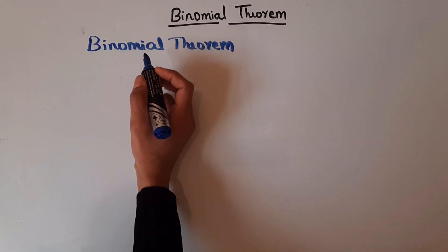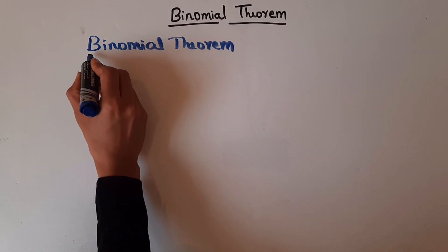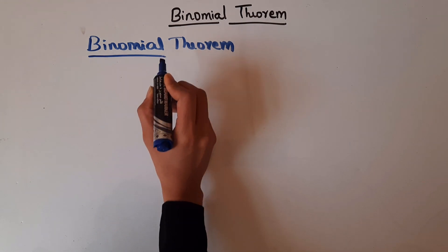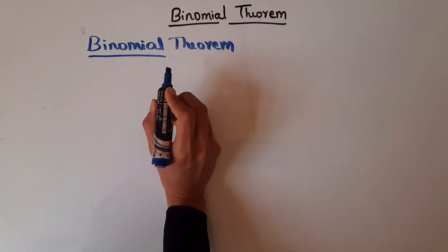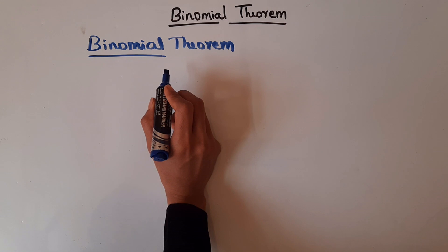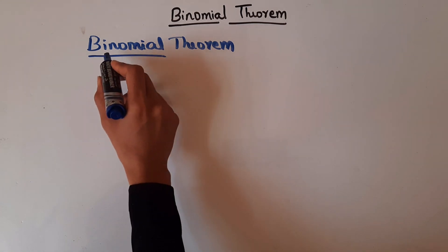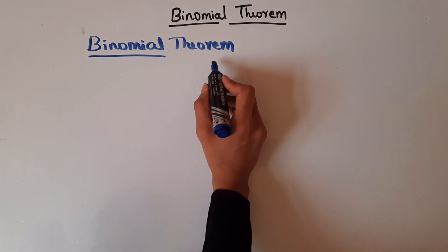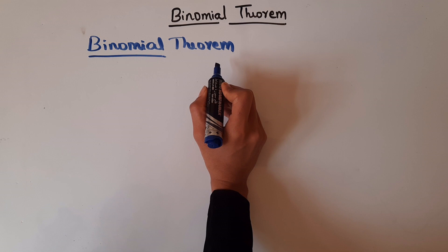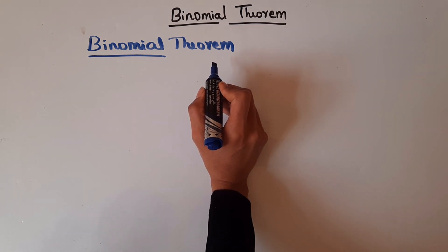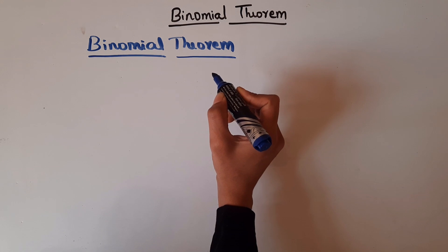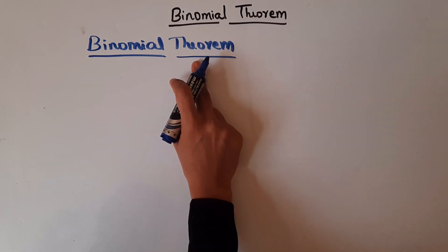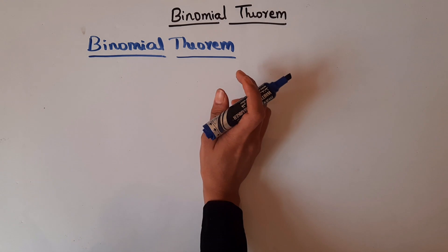Let's see what is this binomial theorem. The name itself says 'binomial,' which means two terms in an expression. Such expressions are called binomial expressions. This binomial theorem helps in expanding or solving the binomial expressions.